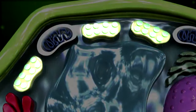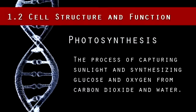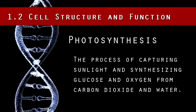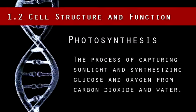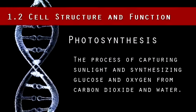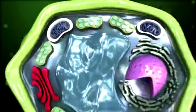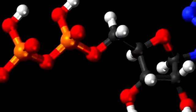The final difference is that plant cells have an additional organelle called a chloroplast. The chloroplast is the site of photosynthesis in a plant cell. Photosynthesis is the process of capturing sunlight and synthesizing glucose and oxygen from carbon dioxide and water. Photosynthesis is one of the most important biochemical pathways since nearly all life on Earth depends on it as a source of energy. Animals metabolize the glucose from a plant source to produce ATP, the energy currency of the cell.